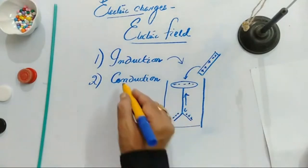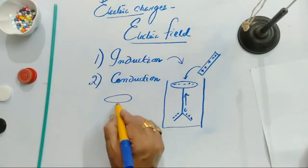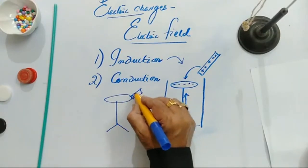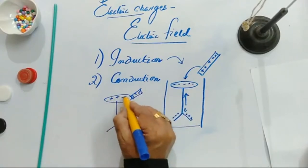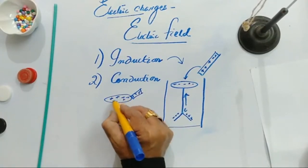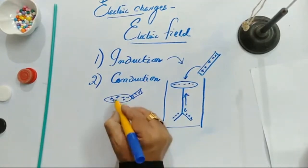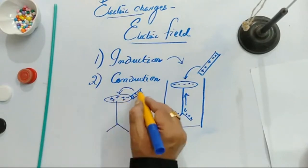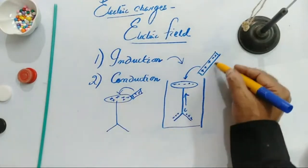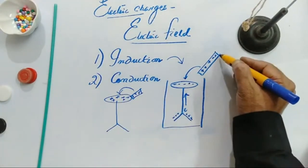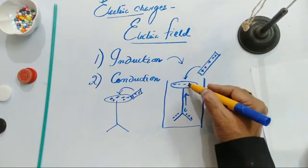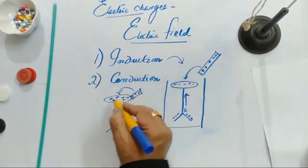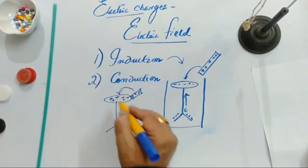Now the other method: what is charging by conduction? In that, we touch the positive rod to the electroscope, and it also gets the same positive charge. When we put it in contact, the same charge is transferred. When we keep the glass rod — which is a positively charged rod — far off, you will get the opposite charge. In induction you induce the opposite charge; in conduction, by touching it you transfer the same nature of charge.